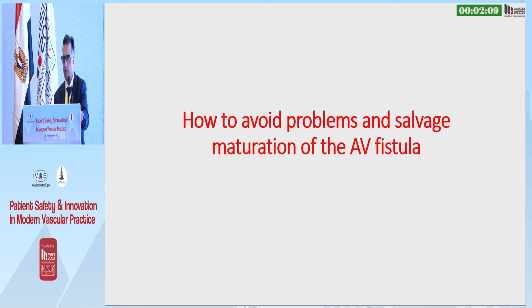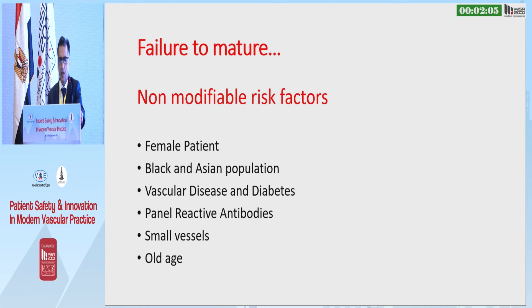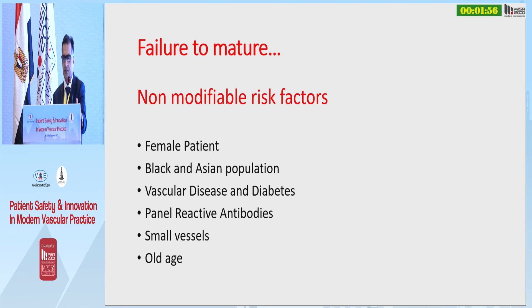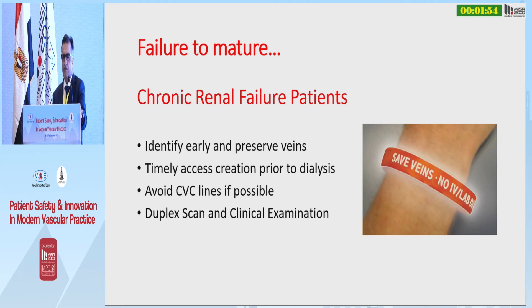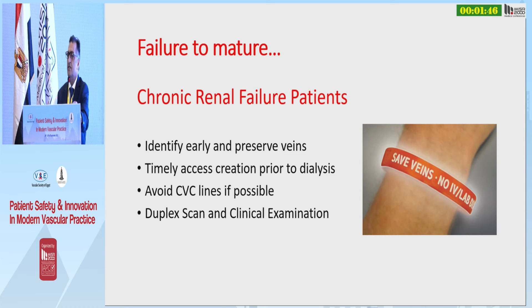So how are we going to avoid problems and salvage a fistula that hasn't matured? Some factors we can't fix — you're not going to be able to adjust these. But what about the modifiable risk factors? Identify these patients early and try to get vascular access at least three to six months prior to potential dialysis, and avoid CVC lines.